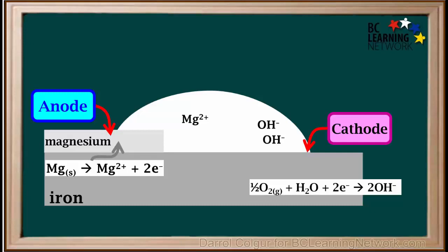Because iron did not oxidize, there are no Fe2+ ions in solution, so no rust can form. As magnesium is oxidized, the electrons it loses travel through the iron toward the cathode, where they are used up as oxygen is reduced.